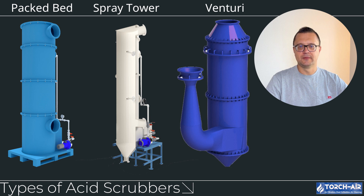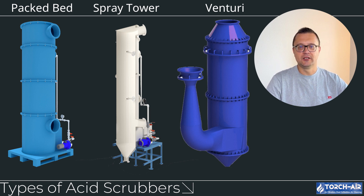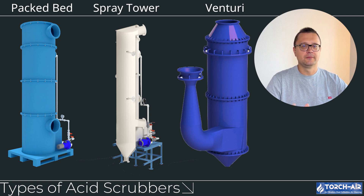Spray tower acid scrubbers. In spray tower scrubbers, the gas stream is sprayed with a fine mist of scrubbing liquid, allowing the acid gases to dissolve and neutralize. These systems are relatively simple and effective, but may not be as efficient for removing highly soluble gases as packed bed scrubbers. Their advantage is a simple design that is easier to maintain. They are best for moderate pollutant loads, such as sulfur dioxide (SO2) removal in power plants or general exhaust control in manufacturing.